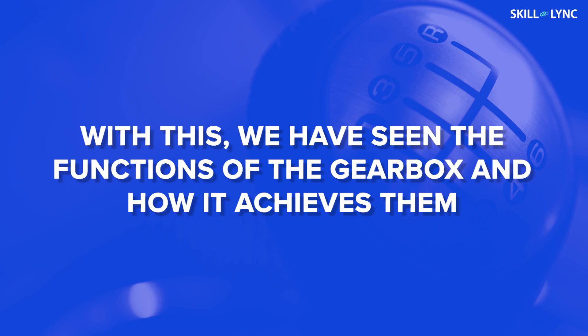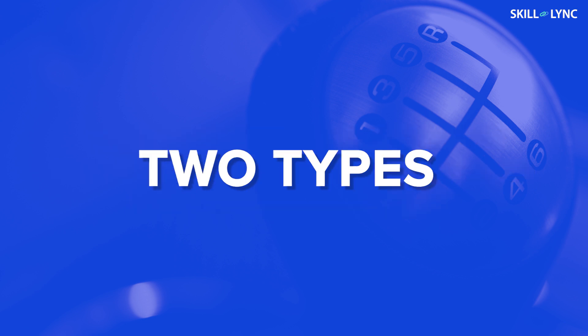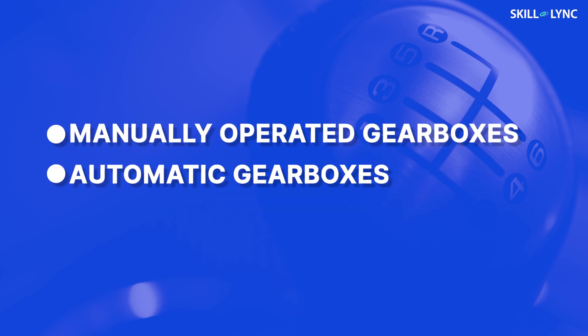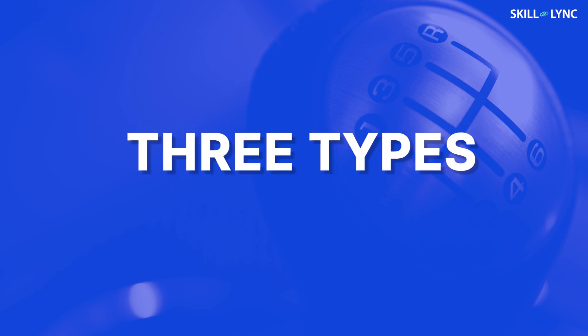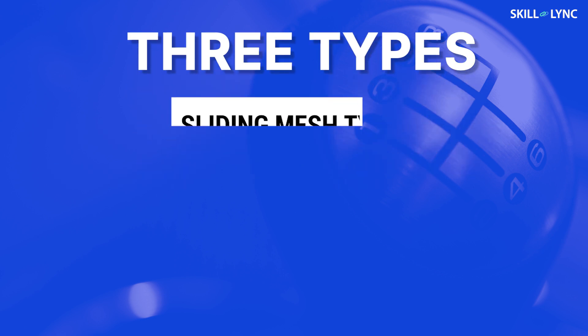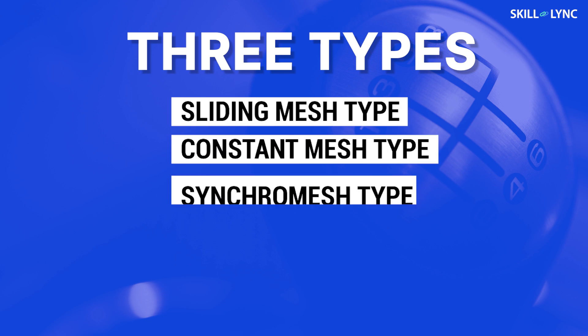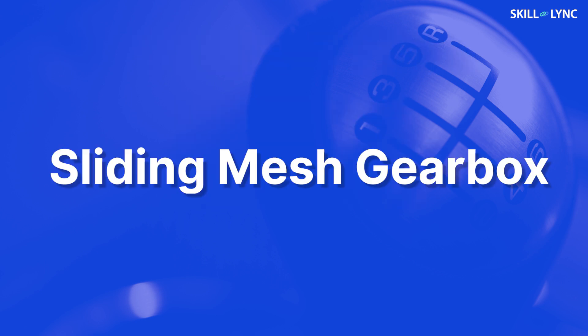With this, we have seen the functions of the gearbox and how it achieves them. Gearboxes are of two types: manually operated gearboxes and automatic gearboxes. Manually operated gearboxes are further classified into three types. They are sliding mesh type, constant mesh type, and synchro mesh type.